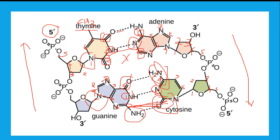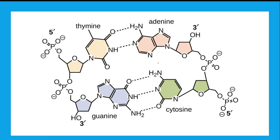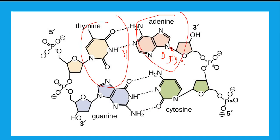Thymine and adenine are joined by double hydrogen bonds; guanine and cytosine have triple hydrogen bonds. The bond between sugar and base is a beta-glycosidic bond. The two bases are joined by hydrogen bonds, the nitrogen base and sugar are joined by beta-glycosidic bond.